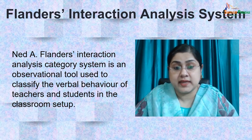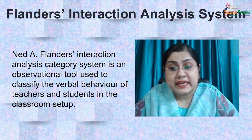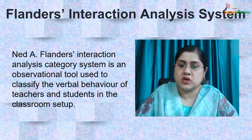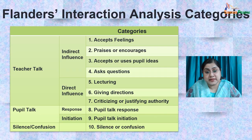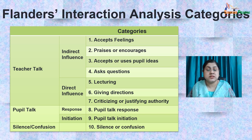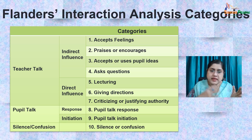Ned Flanders categorized the instruction of teachers and pupils in the classroom into 10 different categories of behavior, communication, and interaction. He first divided the entire communication into three broad categories: the first is teacher talk, the second is pupil talk, and the third is silence or confusion. These three major categories are then further divided into 10 different categories.